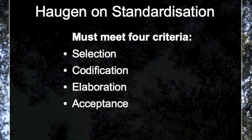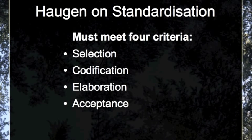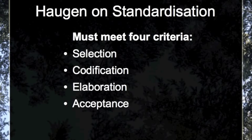Standard English was selected because the seat of government was in London. It was codified partly through printing, for printers required settled forms, and partly through education, as the new middle classes demanded an education in English rather than in French or Latin. Its elaboration was a result of its quick spread through all the written discourse, and not merely the language of government. These three effects then led to its acceptance as the usage of educated people, at least in formal situations.